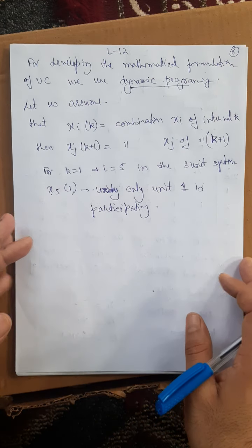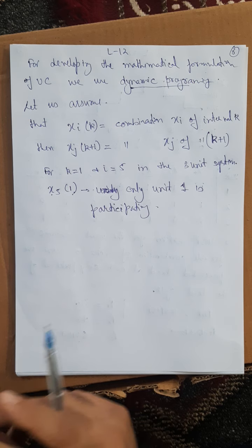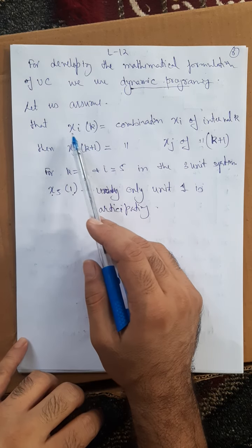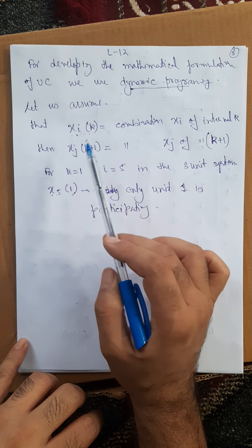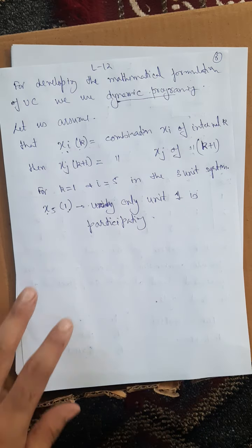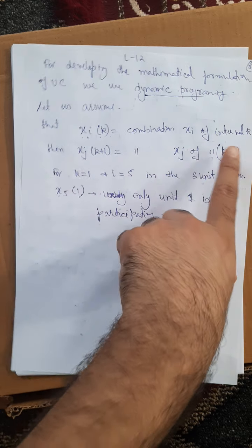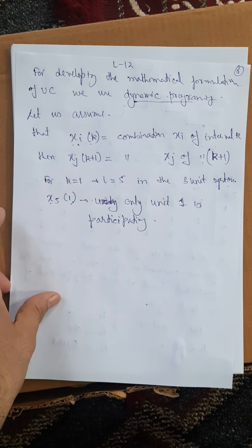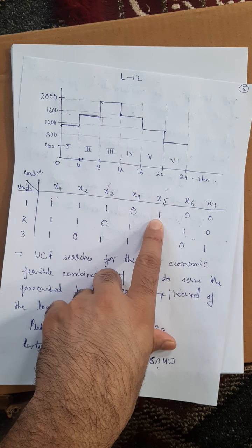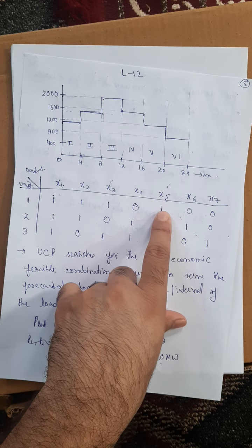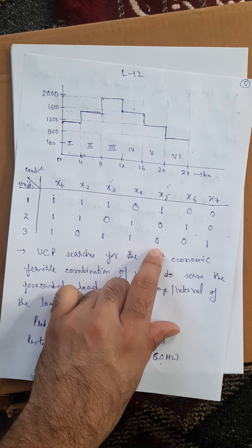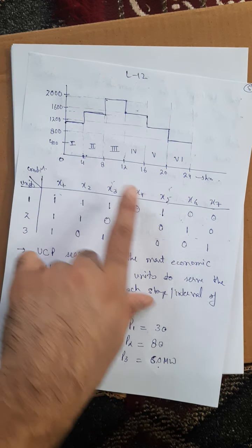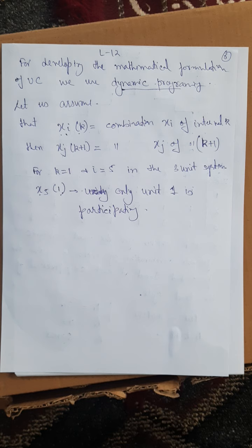For developing the mathematical formulation of unit commitment, we use dynamic programming. We assume that x_i^k is the combination x_i for interval k and x_j^(k+1) is the combination x_j for interval k+1. For example, if k equals one (the first interval) and i equals five (the fifth combination), that means only unit one is on and units two and three are off. During the first interval, only unit one will participate and supply power to the load.